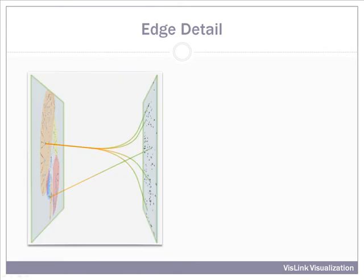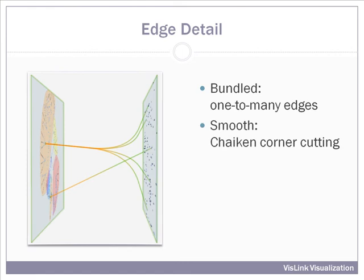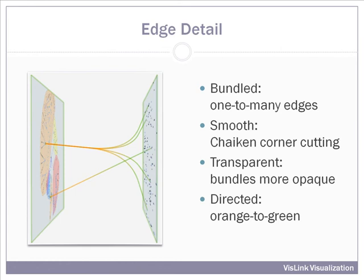VisLink uses bundled 3D edges, which are made using the Chaikin corner-cutting algorithm. Edges are transparent, so bundles become more opaque. Edges are directed, with orange being the source node and green being the destination point.